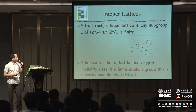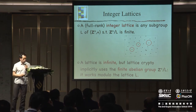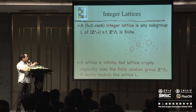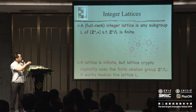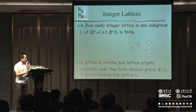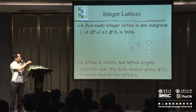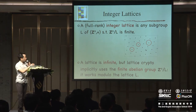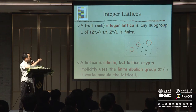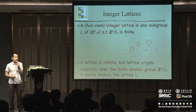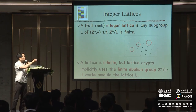Yesterday we talked about integer lattices, which are just a special case. We take any subgroup of Z^n with the constraint that the quotient is a finite group. If I take any subgroup of Z^n, the quotient might be infinite. But if I take an integer lattice such that the rank is n, then necessarily the quotient is going to be finite. These are the lattices you deal with in cryptography — we always work with an integer lattice such that the quotient is finite.